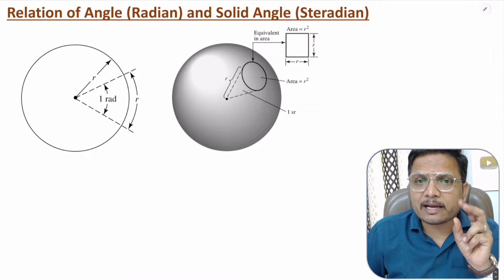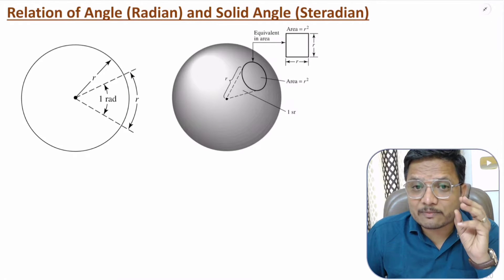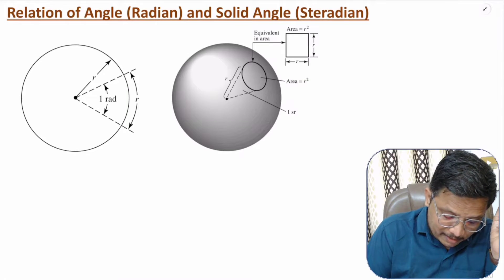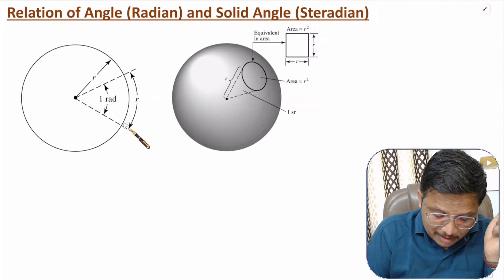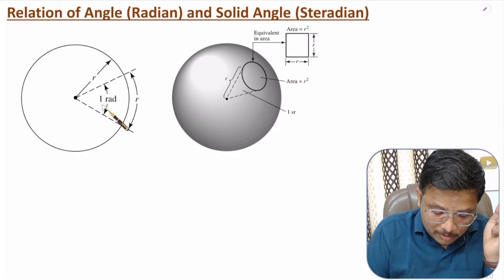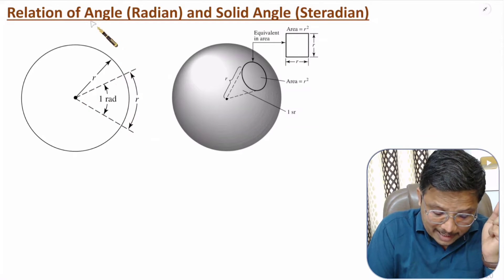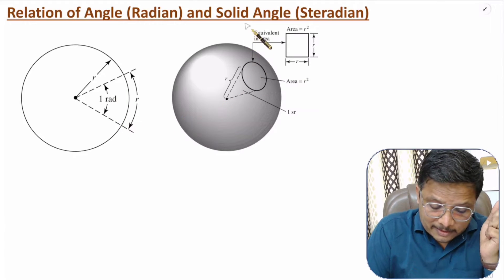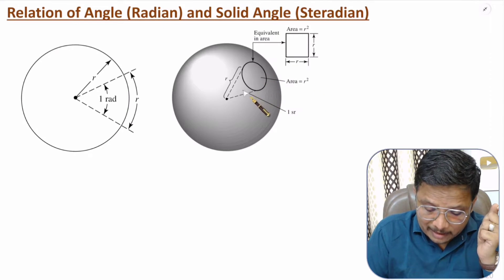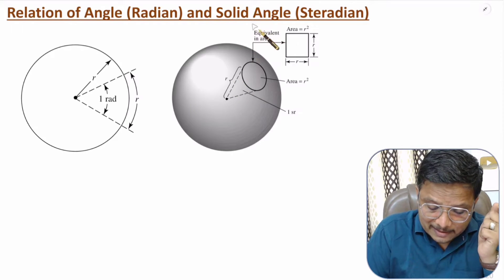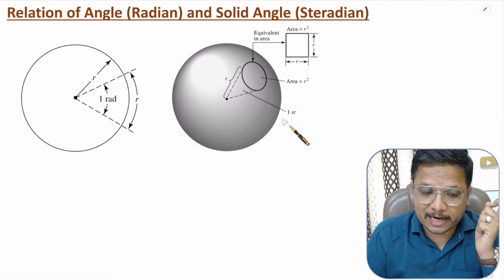Now the relation between angle and solid angle: angle is measured in 2 dimensions and solid angle in 3 dimensions. For 1 radian, arc length equals r and radius equals r, so angle = r/r = 1 radian. For solid angle, if area is r² and radius is r, then solid angle = r²/r² = 1 steradian. So 1 steradian relates directly to 1 radian in each dimension.